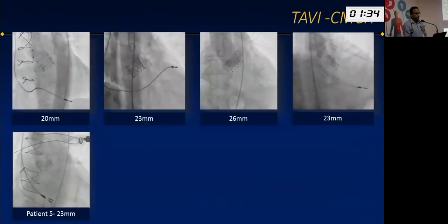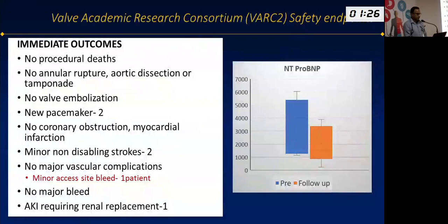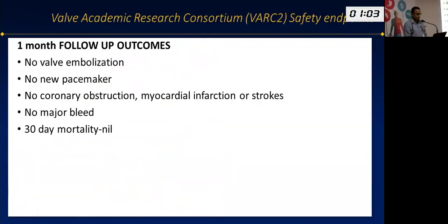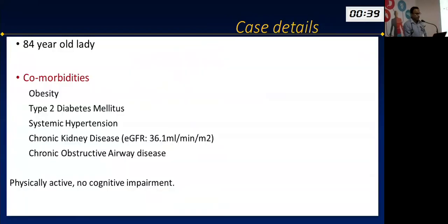Post-procedural angiographies confirm no leakage of dye back into the ventricle, indicating the valves are functioning well. Immediate outcomes showed no procedural deaths, no major complications, and no embolizations. Two patients required pacemaker implantation, there were two minor strokes, and one patient required dialysis. All patients showed clinical improvement with improvement in valve area and gradient, and BNP levels also reduced significantly. At one-month follow-up results remained good, and at up to one year of follow-up, no additional complications or events were recorded.